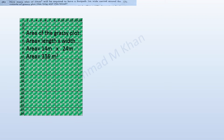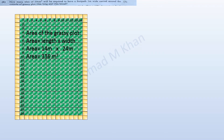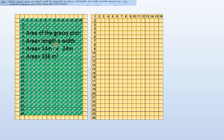To build a 1-meter-wide footpath around this grassy plot, the new bigger plot will have dimensions of 16 meters in breadth and 26 meters in length. This is because we add 1 meter on the right and 1 meter on the left of the 14-meter breadth, giving 1 + 1 + 14 = 16 meters. Similarly, adding 1 meter at the top and bottom of 24 meters gives 24 + 2 = 26 meters.